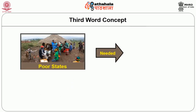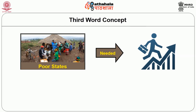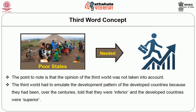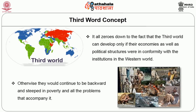Poor states were underdeveloped and thus needed to develop. There were intense debates as to whether development was possible under the current world economic system, but the goal itself was less at issue. The consensus in favor of development ranged from free market liberals to dependency theorists and old-style Marxists. The opinion of the third world was not taken into account; they had to emulate the development pattern of developed countries, having been told over centuries that they were inferior. It all comes down to the fact that the third world could develop only if their economies and political structures conformed to western institutions.